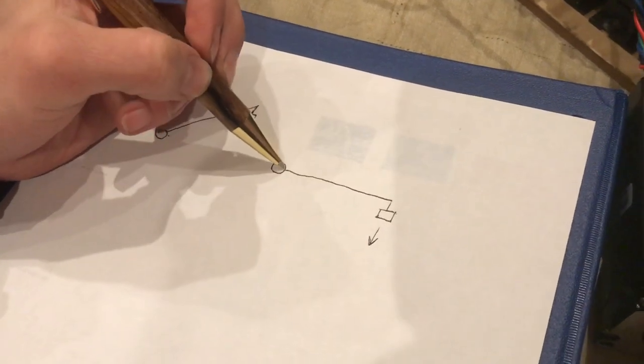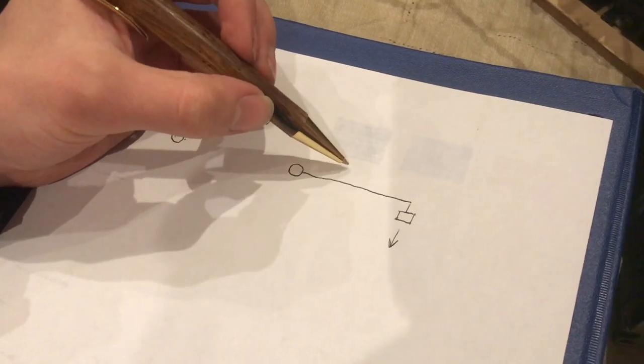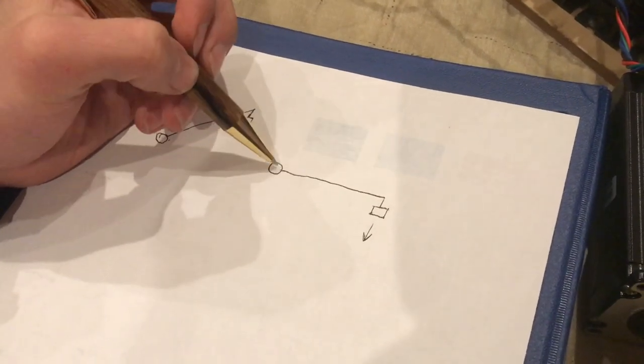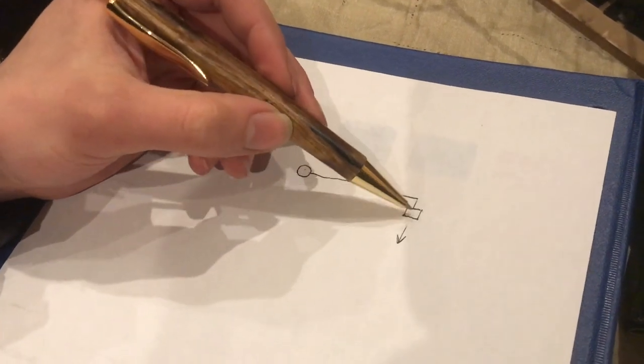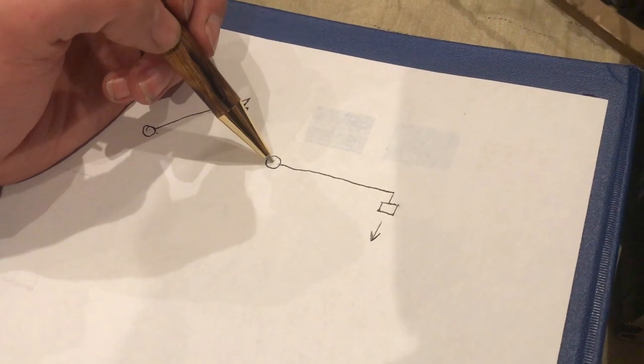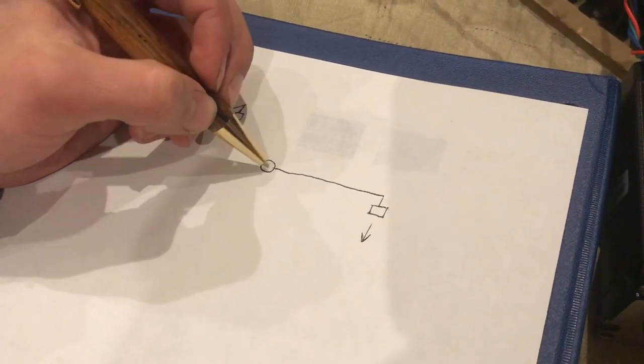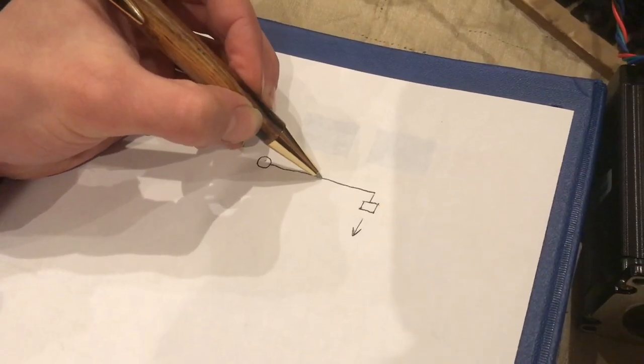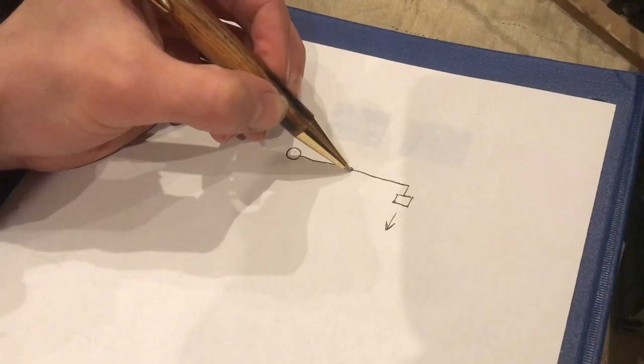So here we have a scenario where the downforce is perpendicular to this lever, or what they call a moment arm, and it's a point where the downforce is completely applying torque to the motor.